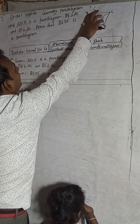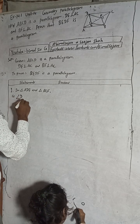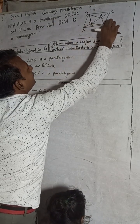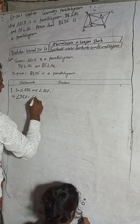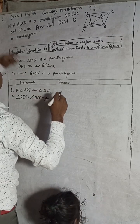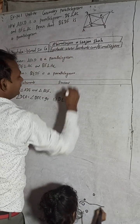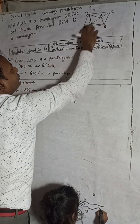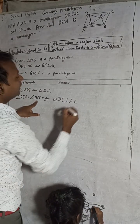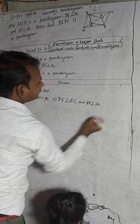Angle DEA equals angle BFC — this angle is 90 degrees, and this angle is also 90 degrees. The reason: DE is perpendicular to AC, so when DE is perpendicular to AC, this angle is 90 degrees. And this is also 90 degrees because BF is perpendicular to AC.